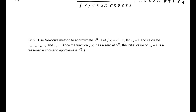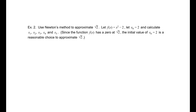Next, we want to use Newton's method to approximate square root of two. Let f of x equal x squared minus two. We're going to choose x naught to be equal to two and calculate x₁, x₂, x₃, x₄, and x₅. Since the function f of x has a zero at square root of two, the initial value of x naught equals two is a reasonable choice. So x₁ will be two minus f of two divided by f prime of x naught.